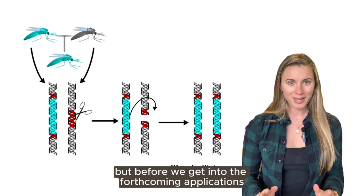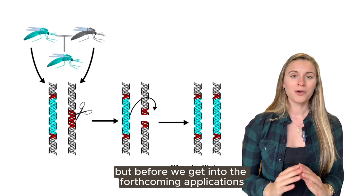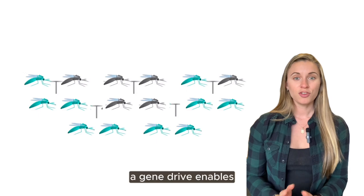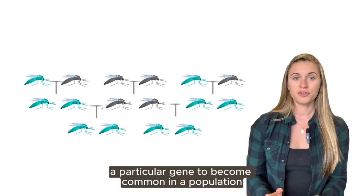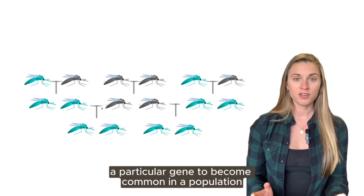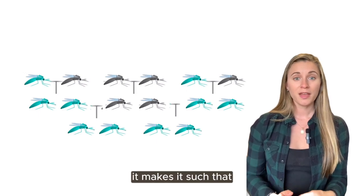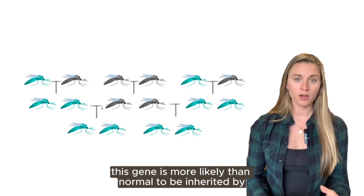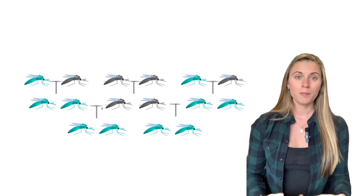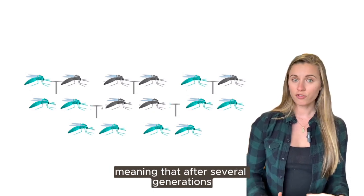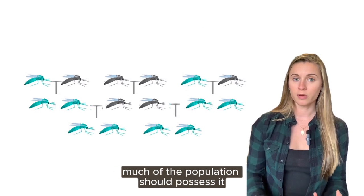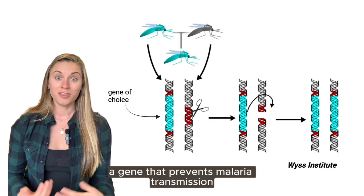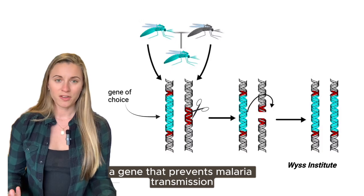But before we get into the forthcoming applications, what is a gene drive and how does it work? A gene drive enables a particular gene to become common in a population. It makes it such that this gene is more likely than normal to be inherited by the offspring of a carrying individual, meaning that after several generations, much of the population should possess it. This could be, for example, a gene that prevents malaria transmission.